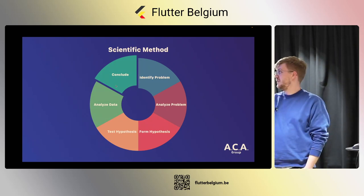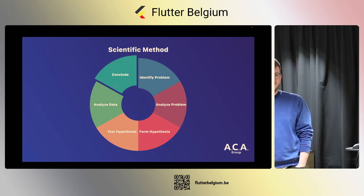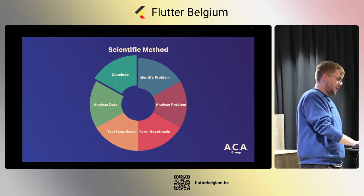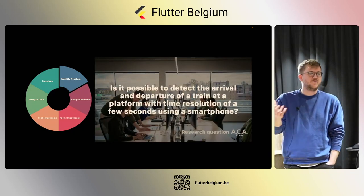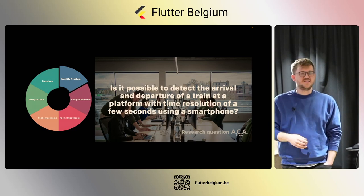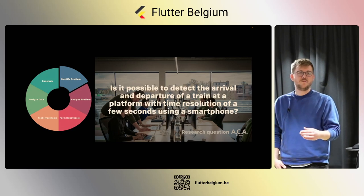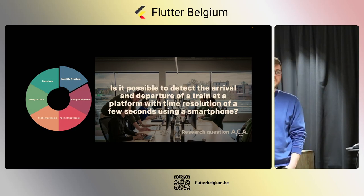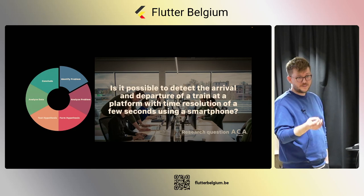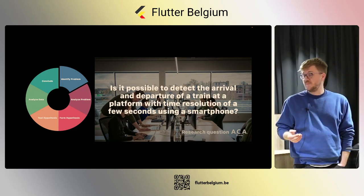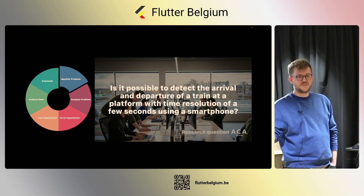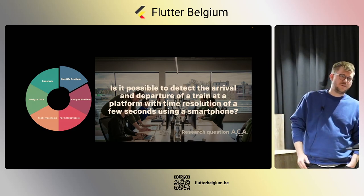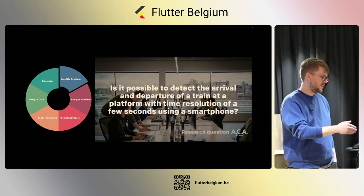If you're lucky, in the first pass you get to your solution. If you're unlucky — like most of the time — it becomes more complex and you'll need a few iterations. Their question, 'we only have approximate data, please fix this,' isn't something we can really work with. After talking with them, we arrived at: is it possible to detect the arrival and departure of a train at the platform with good time resolution — within a few seconds — using a smartphone?